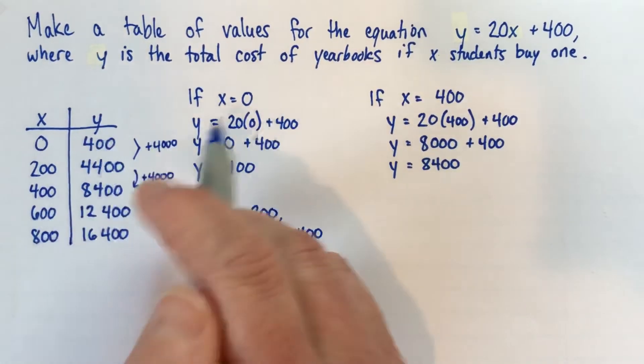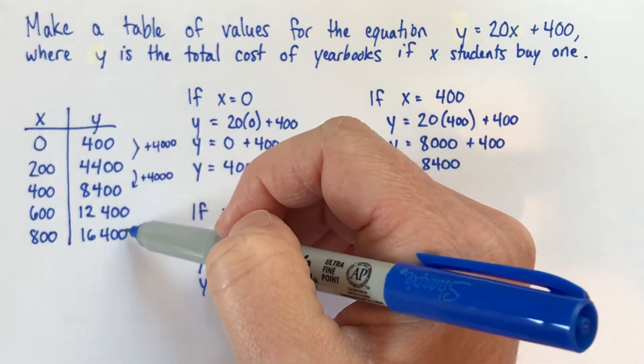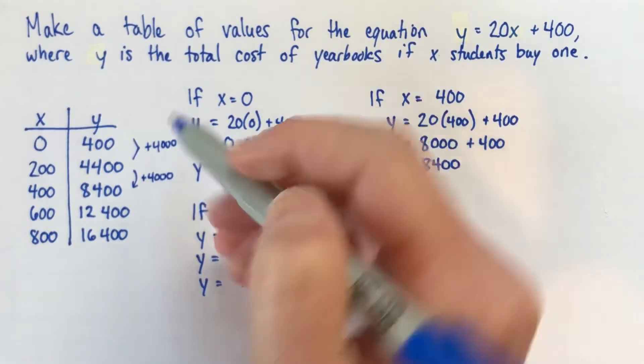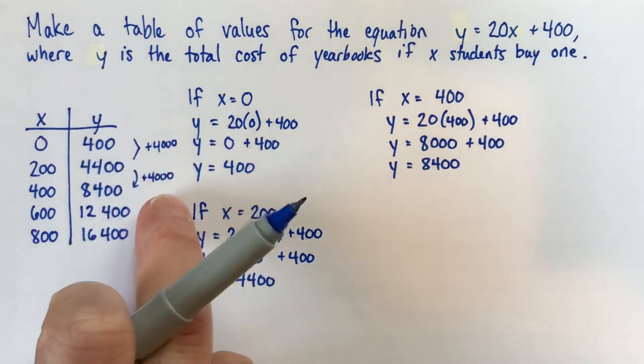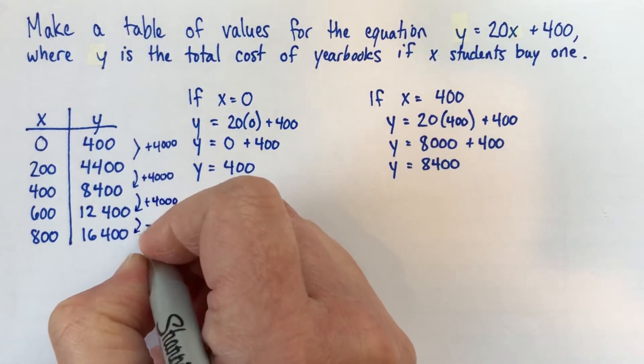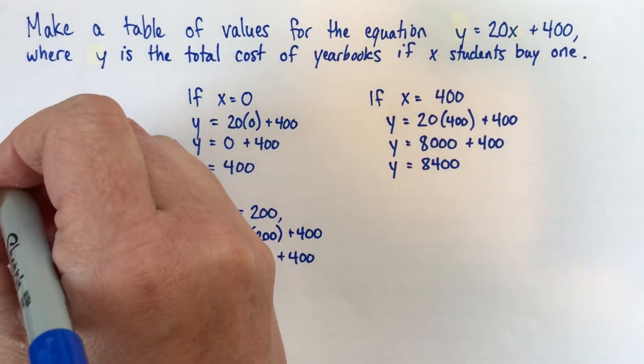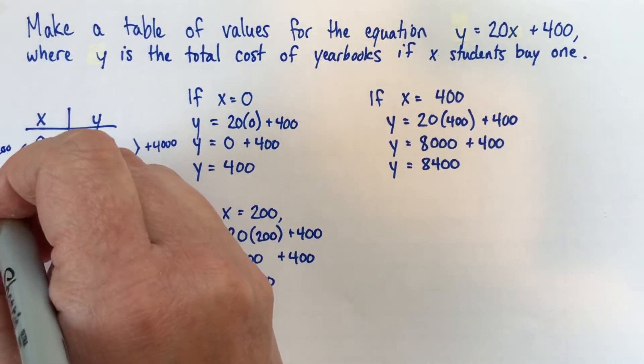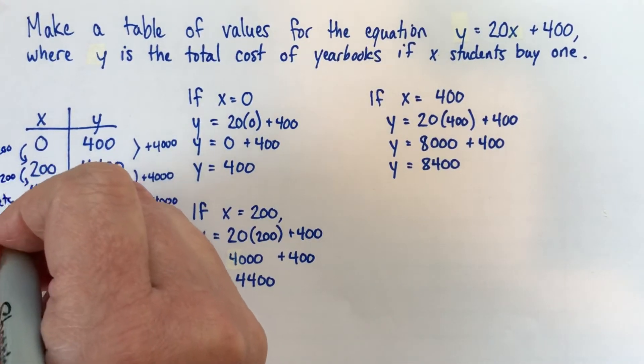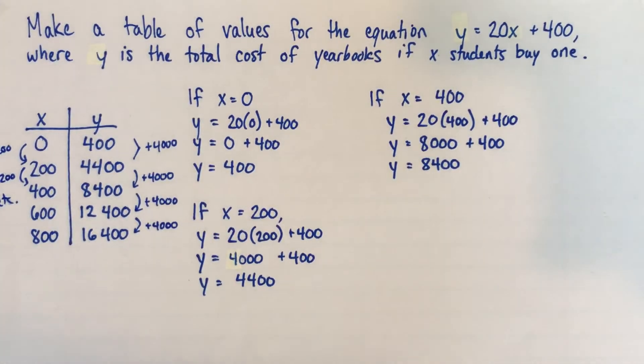So I would suggest after you make your table, just check to see if your x values go up by the same amount each time, your y values should also go up by the same amount. It won't be the same amount of change in your x and y, but each time, this is plus 4,000, plus 4,000. And just to be clear here, this was plus 200 each time. So the x's are increasing by 200 and the y's are increasing by 4,000. And that, if you do that, you will catch almost all of the calculation mistakes that you might otherwise make.